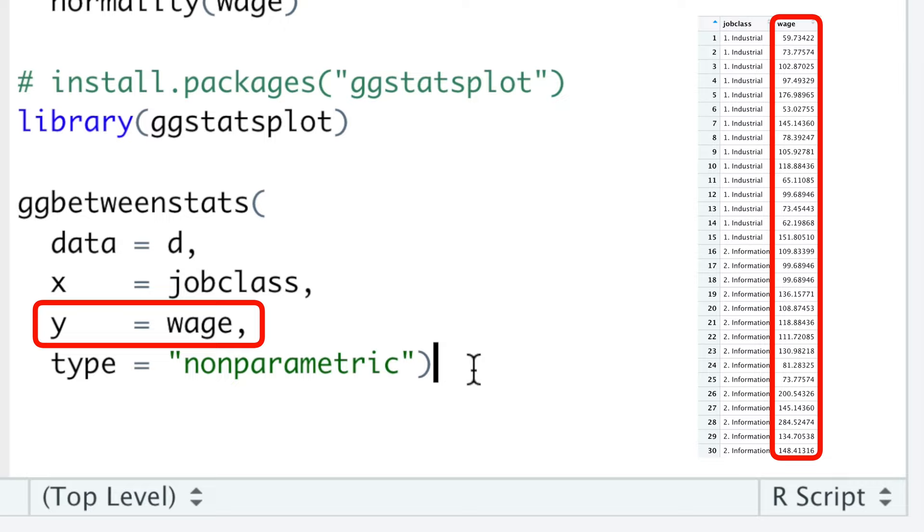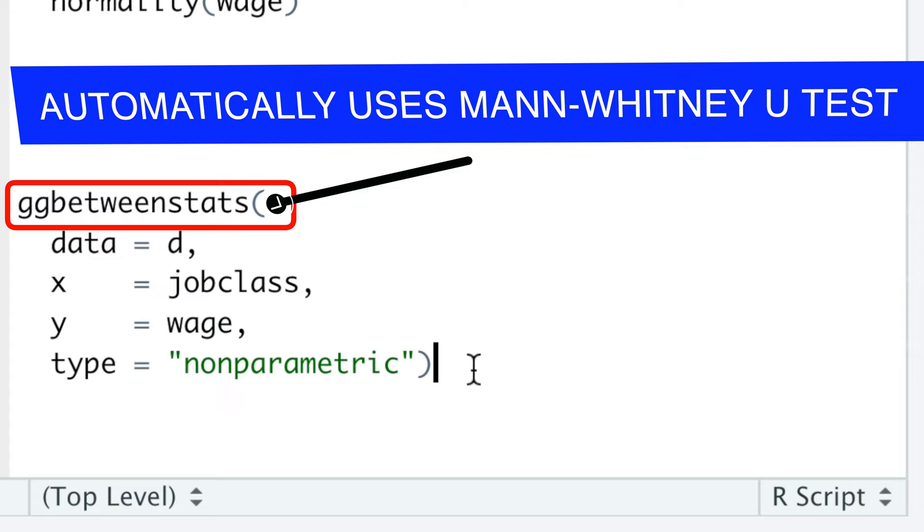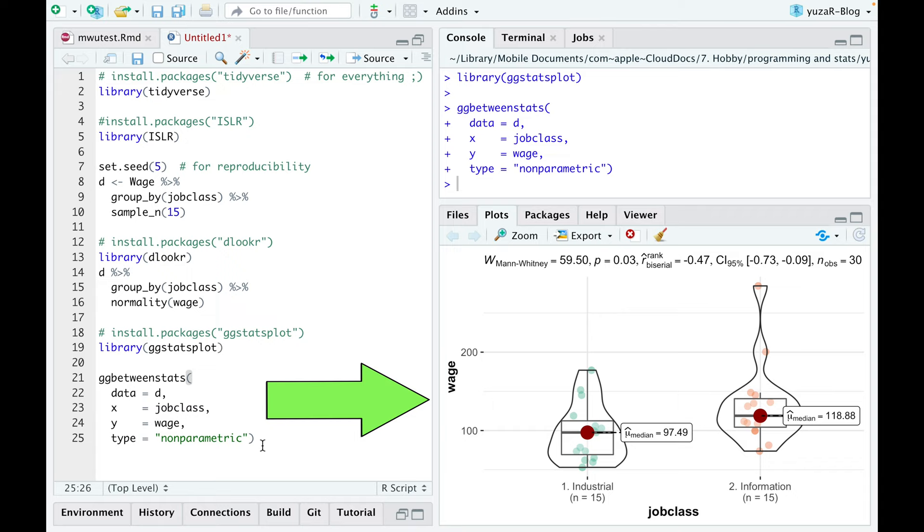Finally, since our data is not normally distributed, we'll choose a non-parametric type of statistical approach, and ggBetweenStats automatically uses Mann-Whitney U-Test for comparing two groups. Such simple command results in this statistically rich and publication-ready plot.